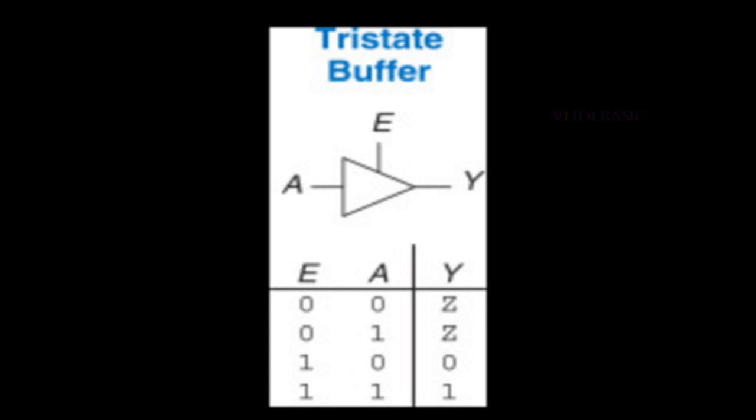You can see the truth table below. So whenever the enable E is 1, whatever the value present in A will be assigned to output Y.